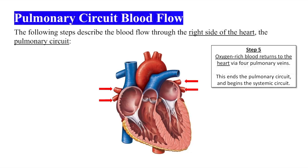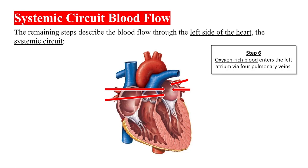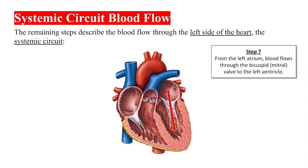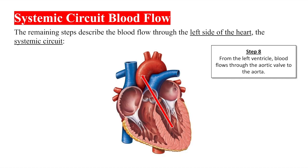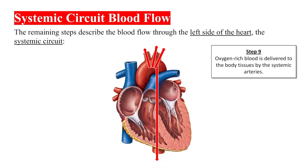The remaining steps describe the blood flow through the left side of the heart, the systemic circuit. Step 6: Oxygen-rich blood enters the left atrium via four pulmonary veins. Step 7: From the left atrium, blood flows through the mitral valve to the left ventricle. Step 8: From the left ventricle, blood flows through the aortic valve to the aorta. Step 9: Oxygen-rich blood is delivered to the body tissues by the systemic arteries.